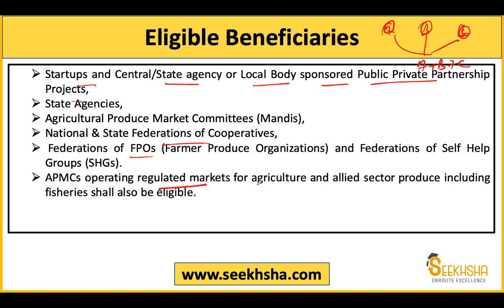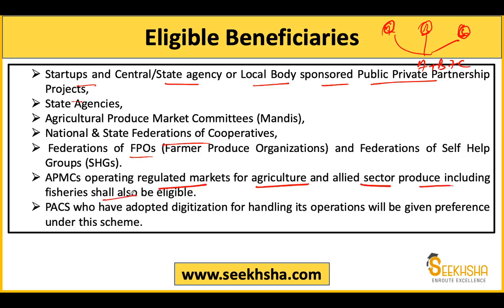APMCs operating regulated markets for agriculture and allied sector produce including fisheries are also eligible. Those who have adopted digitization for handling operations will be given preference. The government wants to promote digitalization through Primary Agriculture Credit Societies (PACS), so digitalized PACS will be prioritized for loans.